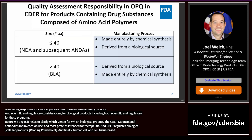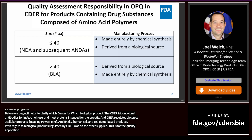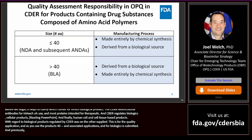For biological products regulated by CDER, the dividing line between a new drug and a biologic is 40 amino acids. For products 40 amino acids or fewer, they are regulated as new drug applications or abbreviated new drug applications. For products greater than 40 amino acids, a biologics license application is submitted — and this is true even for molecules where the amino acid polymer is made by chemical synthesis or derived from a biological source material, including production through recombinant technology.